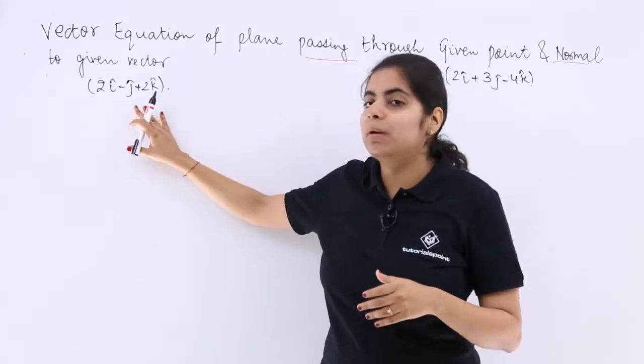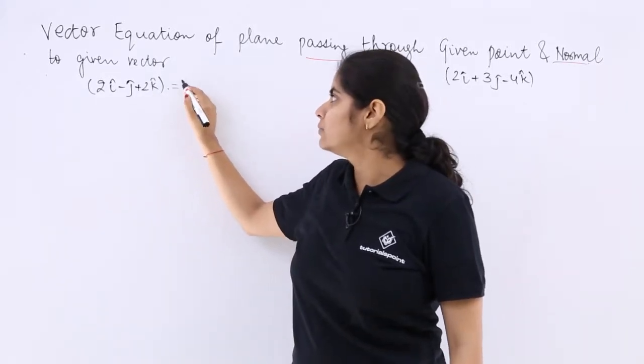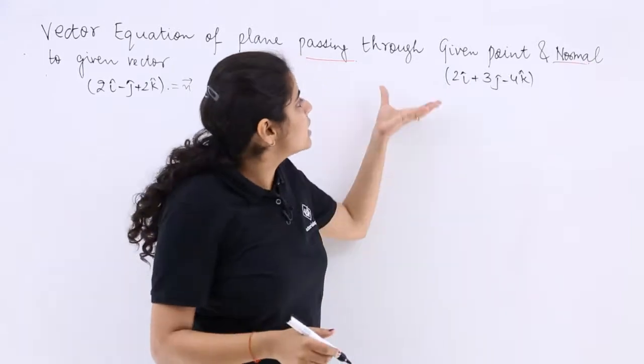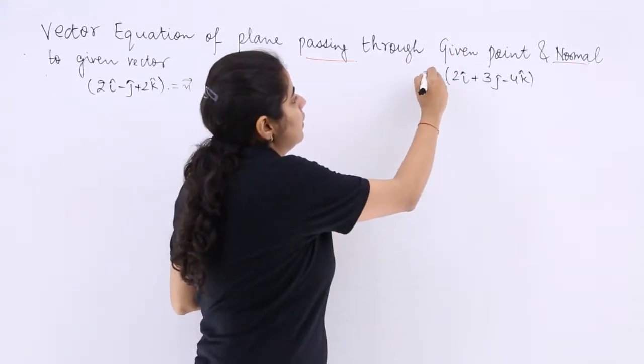So perpendicular to a given vector means this is your n vector, and passing through a given point means this is your a vector.